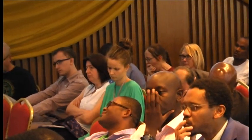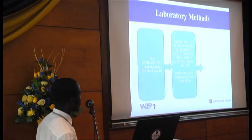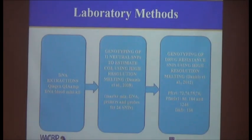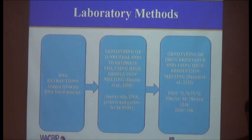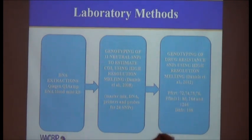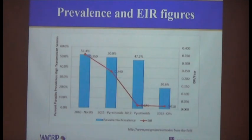The laboratory methods involved DNA extraction, genotyping using high-resolution methods. We used the same method of high-resolution genotyping to determine parasite types and focused on PFCRT codons 72 to 76, associated with chloroquine resistance, and PFMDR1 codons 76, 86, 184, and 1246 associated with drug resistance, and DHFR codon 108 associated with antifolate resistance.